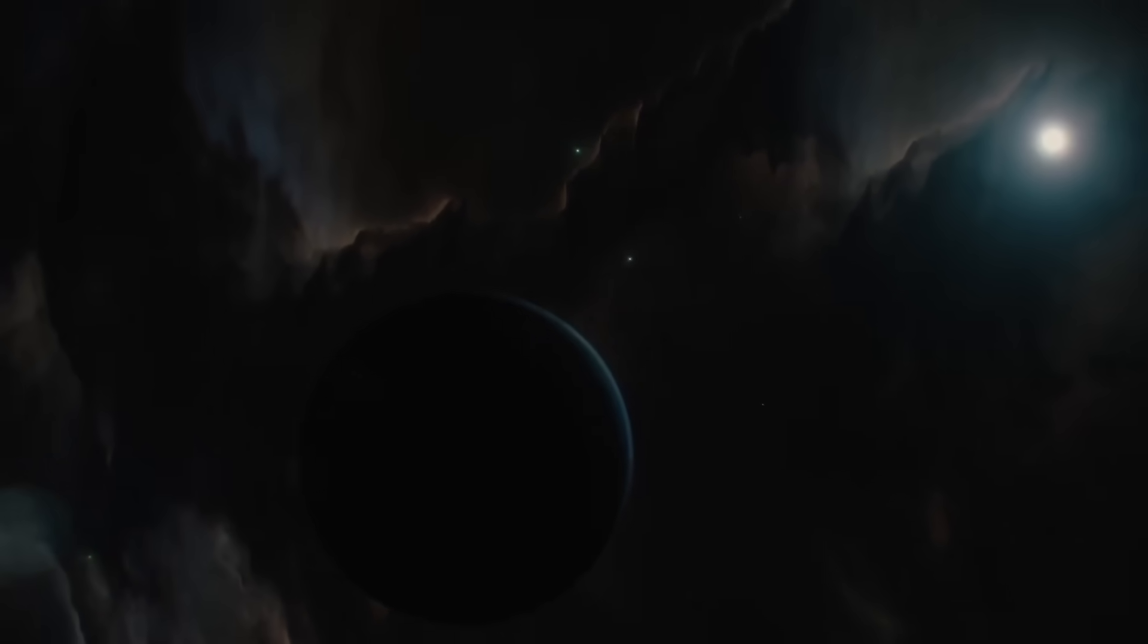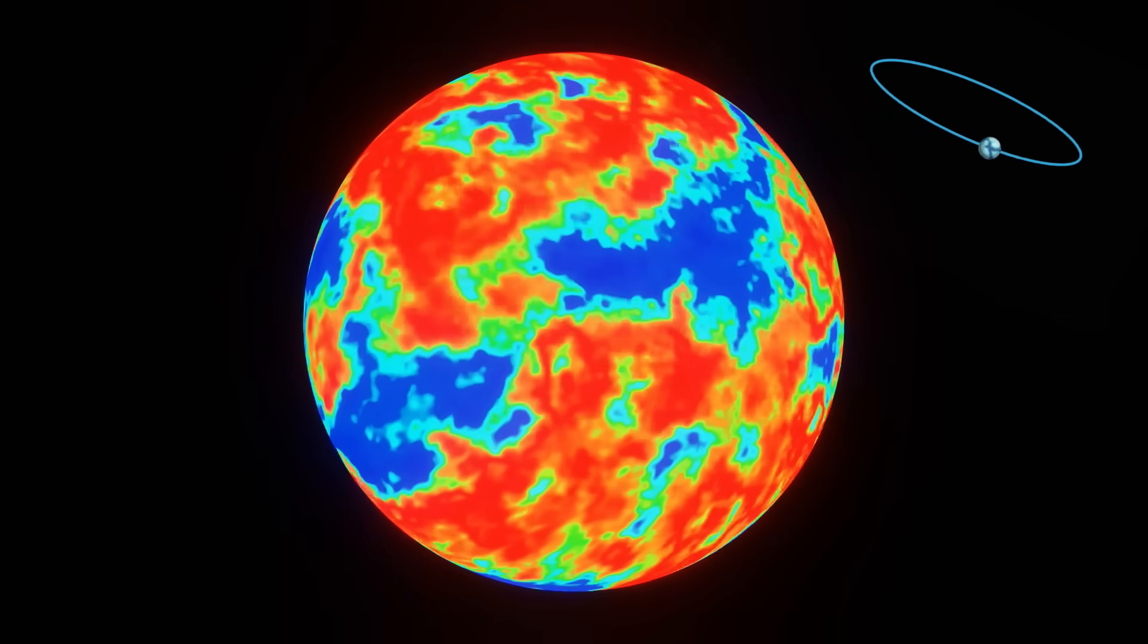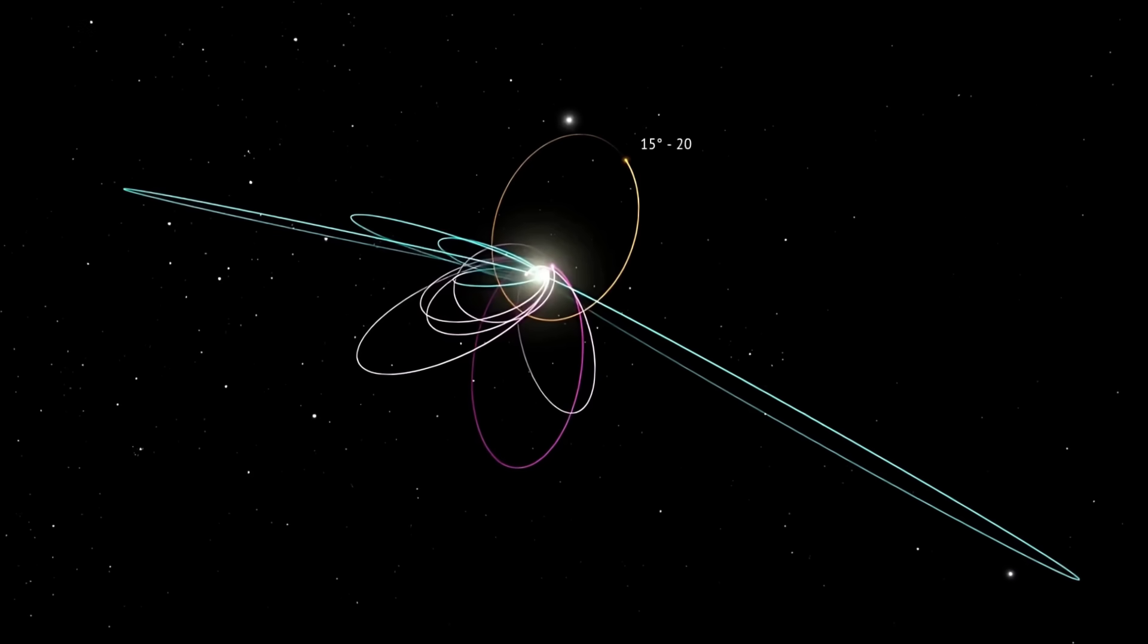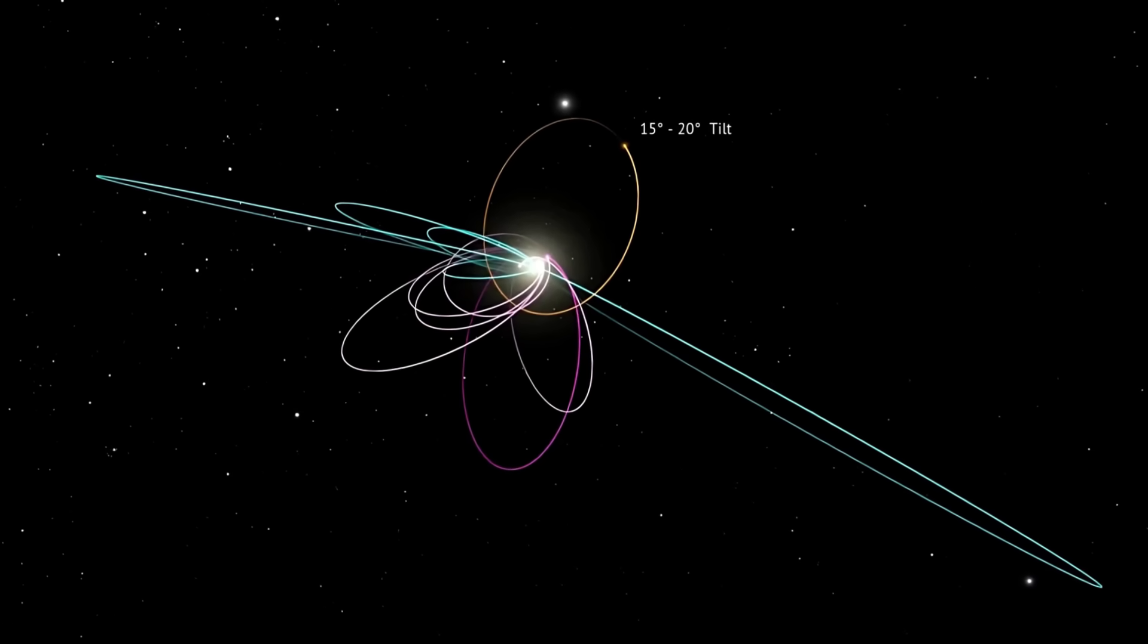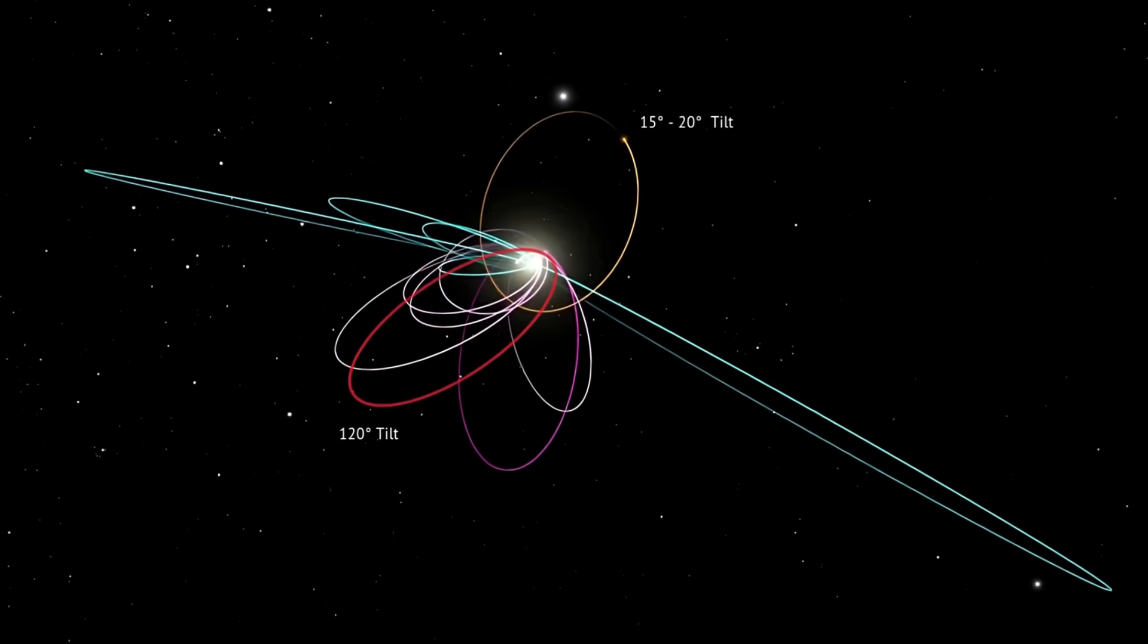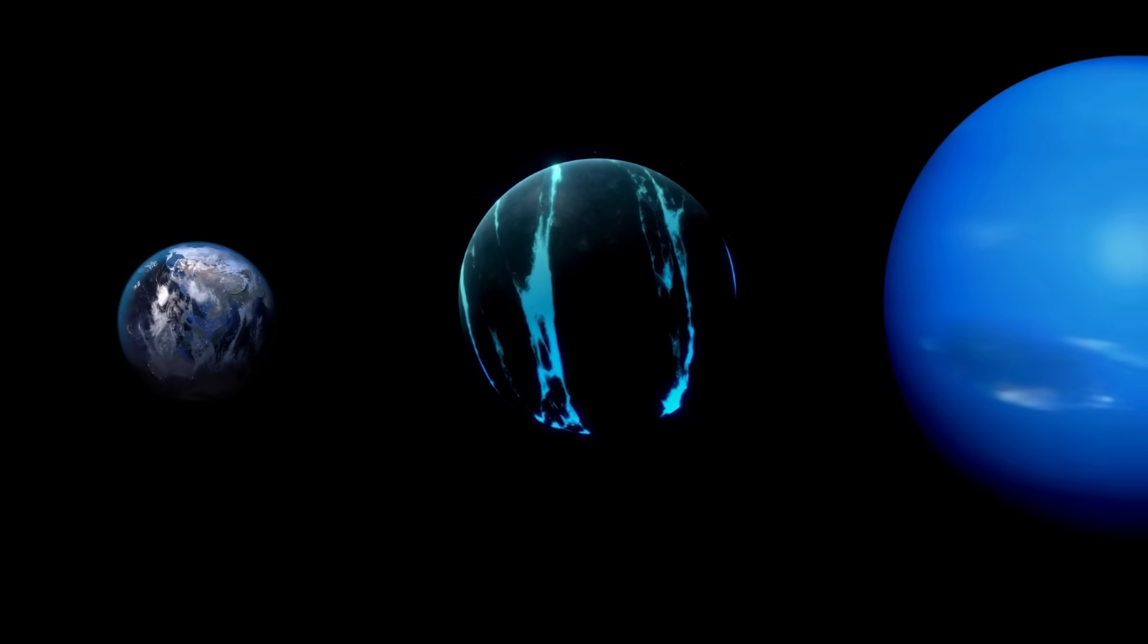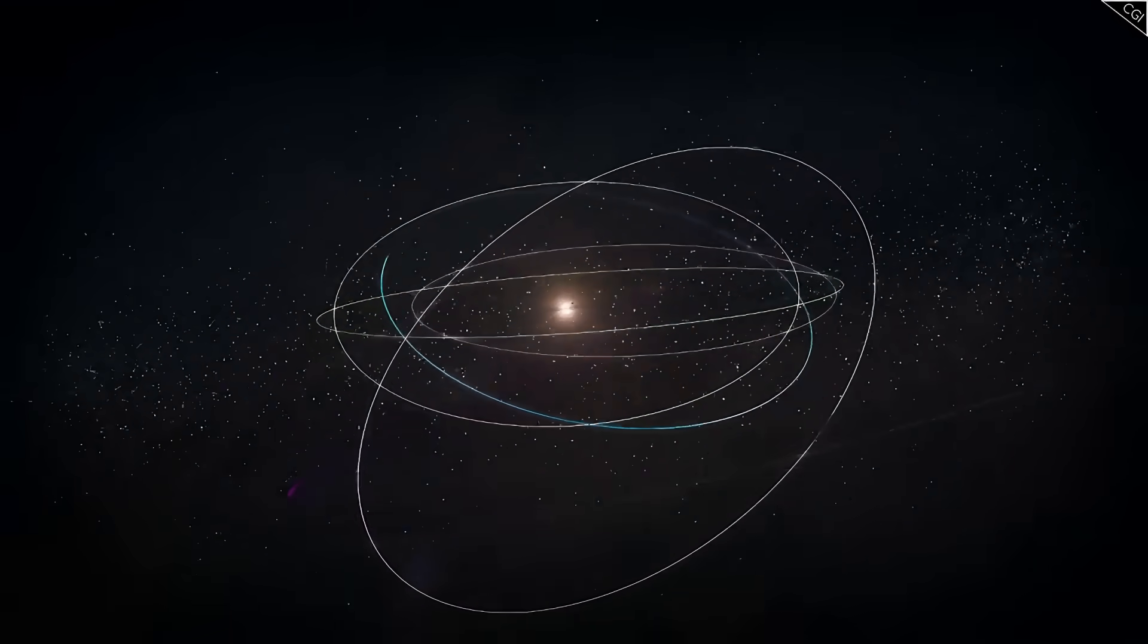But not everyone is convinced. First, Mike Brown, who helped propose the Planet 9 theory, took a look at the data himself. And while he doesn't rule it out entirely, he's skeptical, because the orbit of this candidate object doesn't line up. Planet 9, as predicted, should have an orbit tilted about 15 to 20 degrees from the plane of the solar system. This new object's tilt looks more like 120 degrees. That means it's not just tilted, it's orbiting in the opposite direction from most planets. In Brown's words, that doesn't mean it's not there, but it means it's not Planet 9.